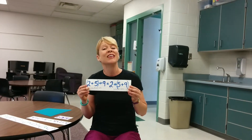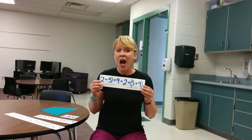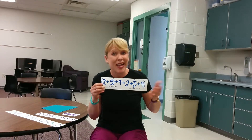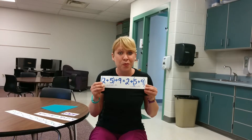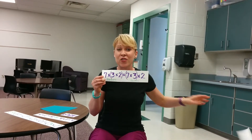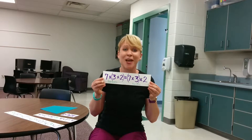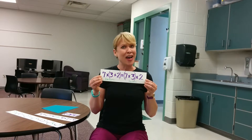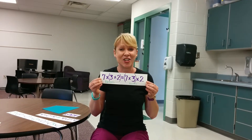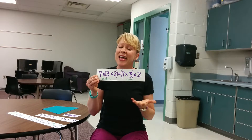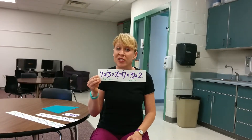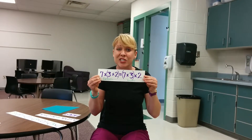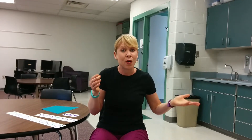The next property is associative. Associative is about the grouping — move parentheses around. It doesn't matter how you group them, the sum is still sound. It doesn't matter how you group them, the product's still sound. All the numbers aren't in exactly the same order; I just switched the parentheses for the associative property.